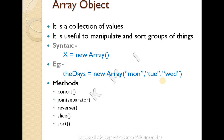These are the built-in objects of JavaScript: the first is the string object, the second is the date object, and the third is the array object.